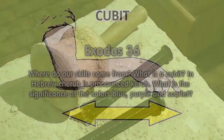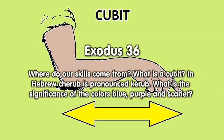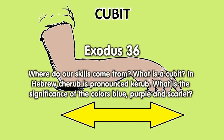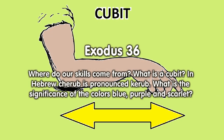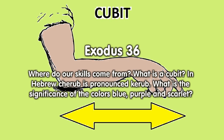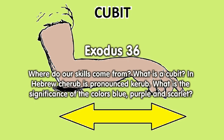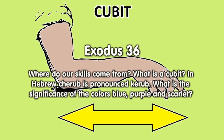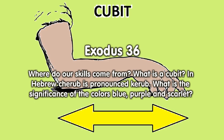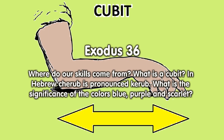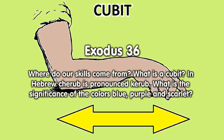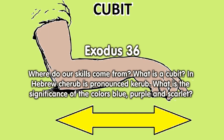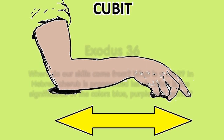In Exodus 36, where do our skills come from? What is a cubit? In Hebrew, 'cherub' is pronounced 'cherub.' What is the significance of the colors blue, purple, and scarlet?